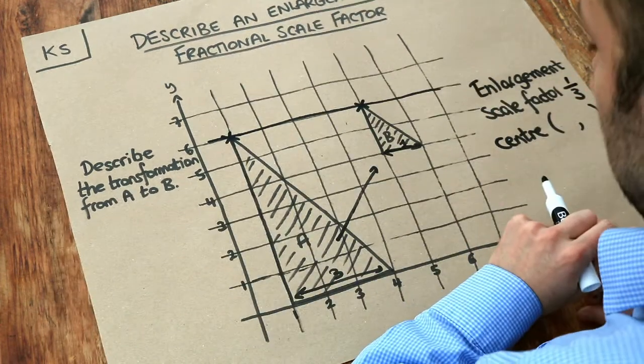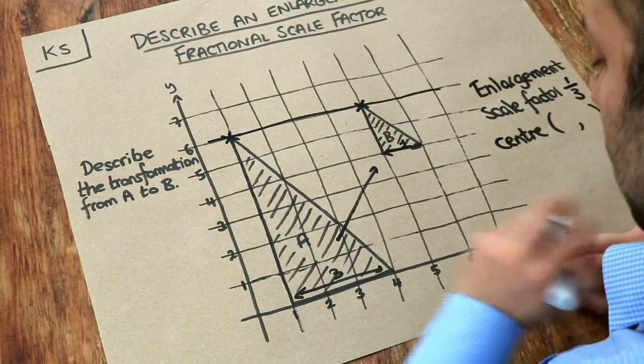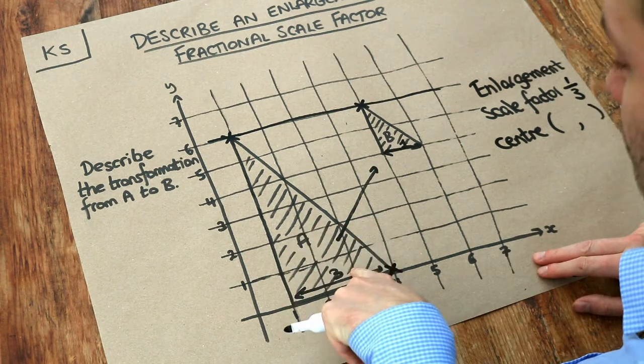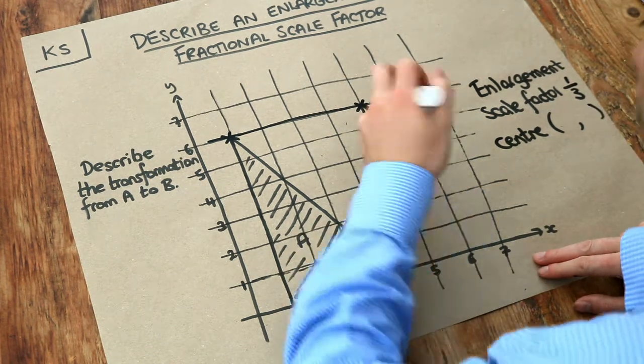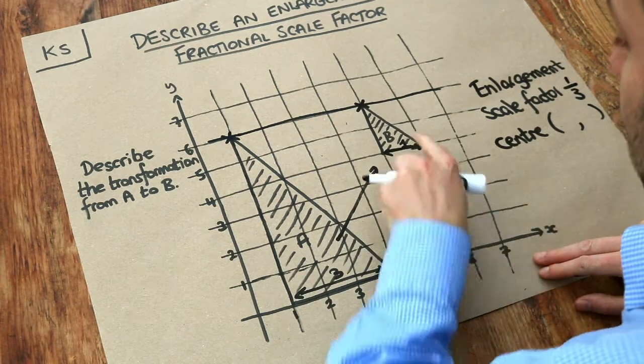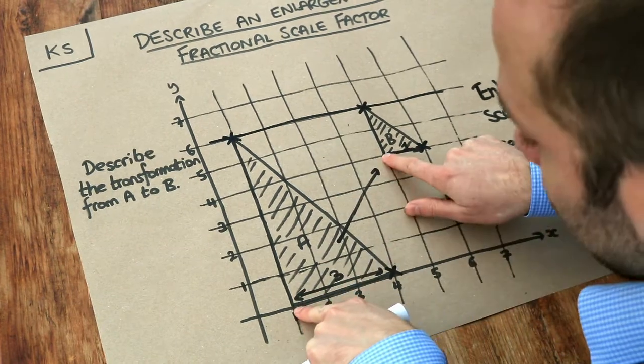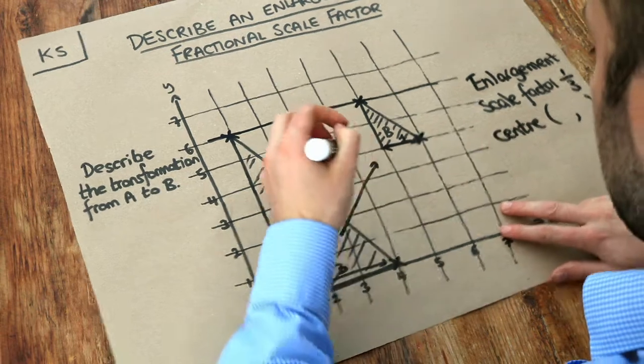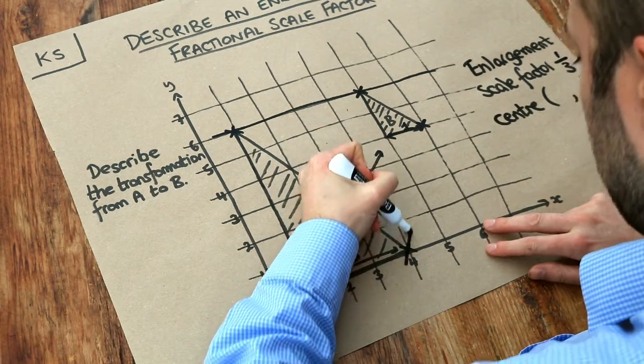And now we pick another two pair of points and do the same thing. So if we take the right point of this original shape, the object, and the right point of the image, the resulting object, we could have used these two as well, but I've just chosen to use these two. Let's do the same thing. We're going to draw a line between these.